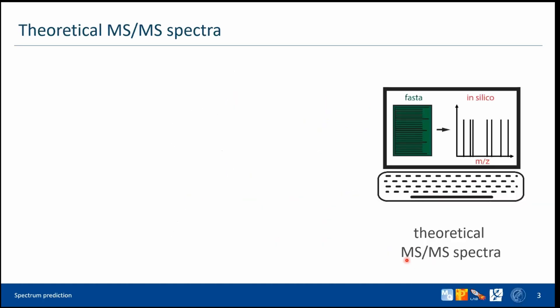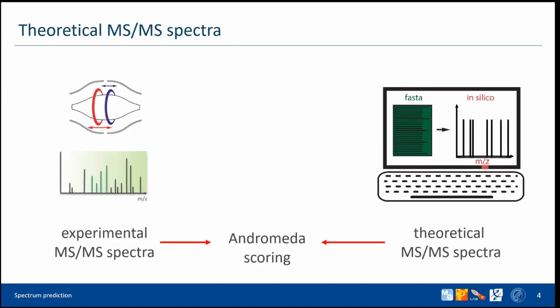With these masses, one can create theoretical MSMS spectra. As you can see, all peaks here have the same height, because we can calculate masses but we don't know anything about the intensities. We also have experimental spectra, and we can compare them — experimental versus theoretical — using some kind of scoring algorithm, for example the Andromeda database search in MaxQuant. This approach has been successfully applied for many years.